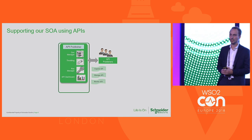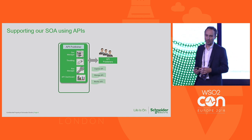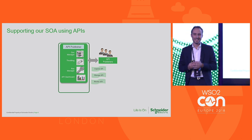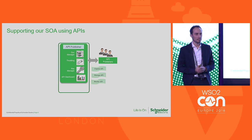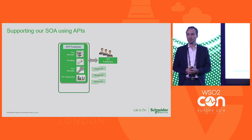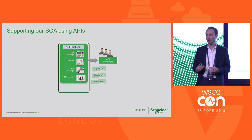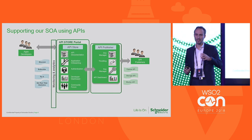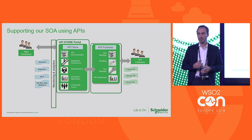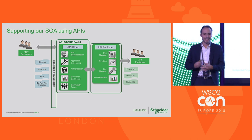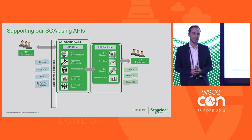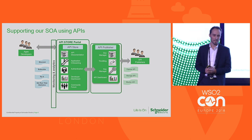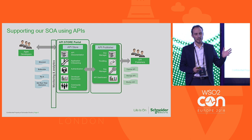To support our service-oriented architecture, we decided to use APIs. Key requirements for API publishers included the ability to expose APIs easily, manage them by applying throttling, versioning, access control, and monitoring usage. On the other side, for application developers wanting to use these APIs, we wanted them to be able — through a store — to access documentation, discover and browse APIs, subscribe, try them in different environments, and get statistics.